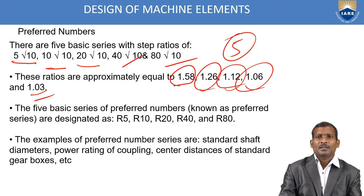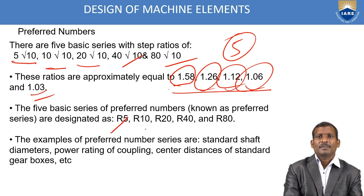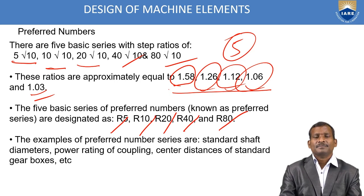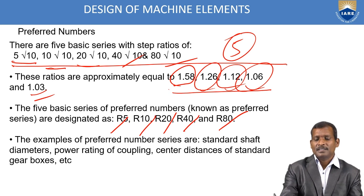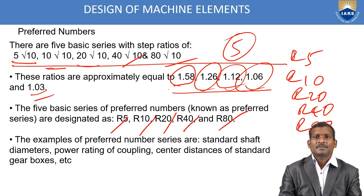The five basic series of preferred numbers are designated as R5, R10, R20, R40, and R80. These are the standard set of series known as preferred series.